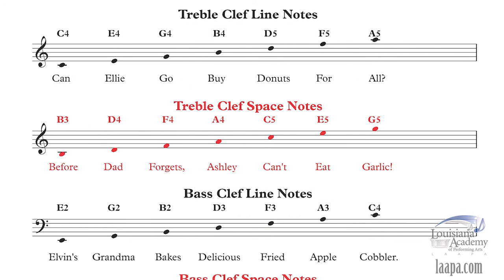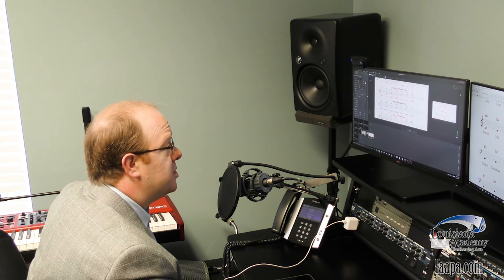Now let's move on to the treble clef space notes. Again, starting at the bottom and working up: 'Before Dad Forgets Ashley Can't Eat Garlic.' So this gives us B, D, F, A, C, E, G. Go to the piano keyboard and find where they are — and stay away from the garlic, Ashley!